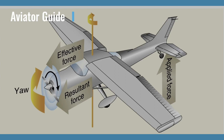Depending on where the force is applied, the airplane is caused to yaw left or right, to pitch up or down, or a combination of pitching and yawing. As a result of gyroscopic action, any yawing around the vertical axis results in a pitching moment, and any pitching around the lateral axis results in a yawing moment. To correct for gyroscopic action, the pilot must properly use elevator and rudder to prevent undesired pitching and yawing.